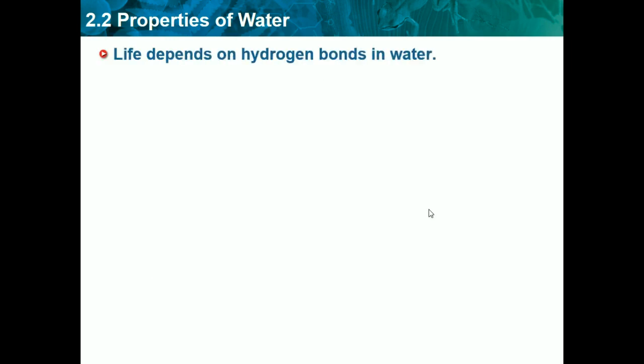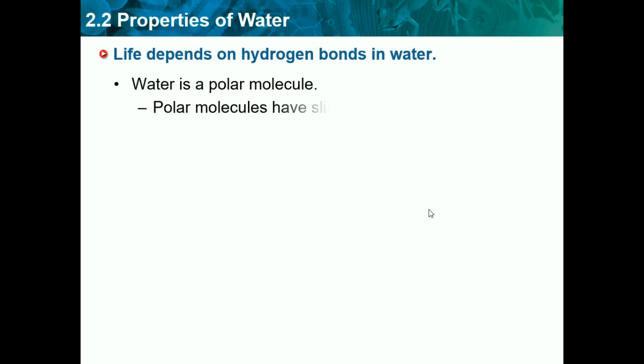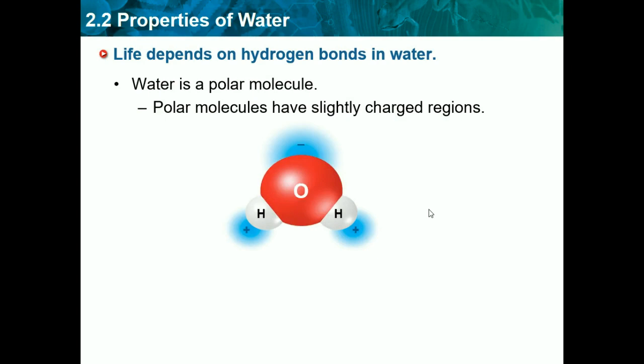Life depends on hydrogen bonds in water. Water is a polar molecule, and polar molecules have slightly charged regions — one region will be slightly positive and one will be slightly negative. This is H2O, which is another name for water, and it's a polar molecule. The oxygen region is slightly more negative, while the hydrogen regions are slightly more positive, so this makes it a polar molecule.